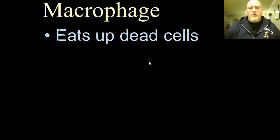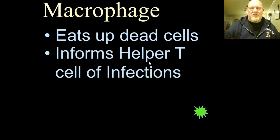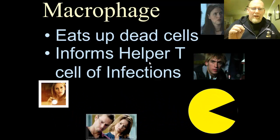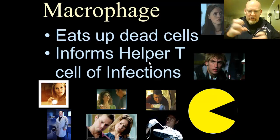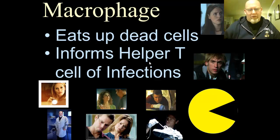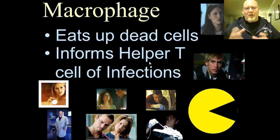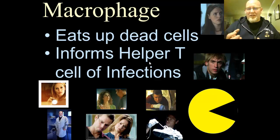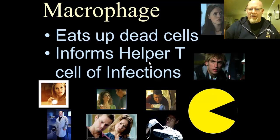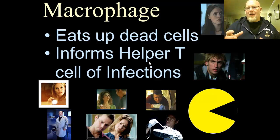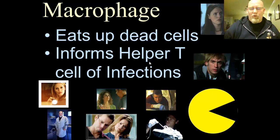The first player in the immune system is the macrophage. The macrophage eats up dead cells — it's the typical white blood cell we think of, wrapping around and enveloping germs like an amoeba. The macrophage has two jobs: it cleans up dead cells, and it informs another white blood cell called the helper T cell about what's going on. Think of the macrophage like a CSI investigator — it figures out a crime scene and then reports all its data to the helper T cell.